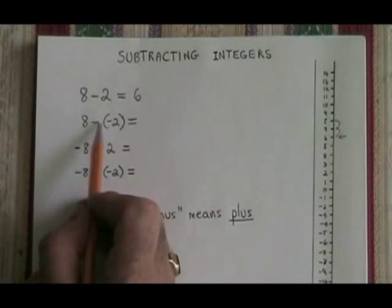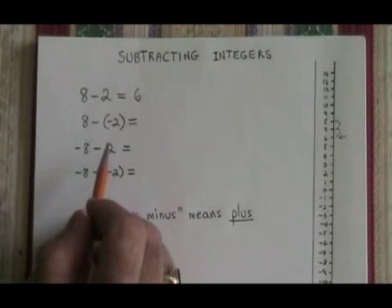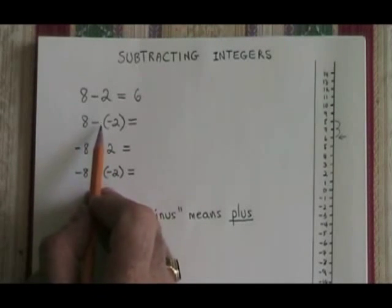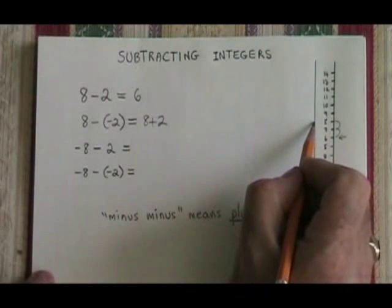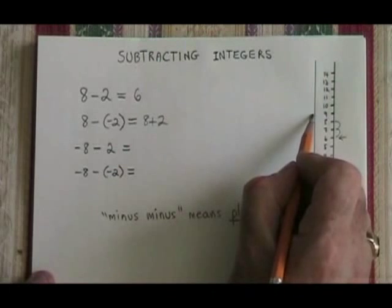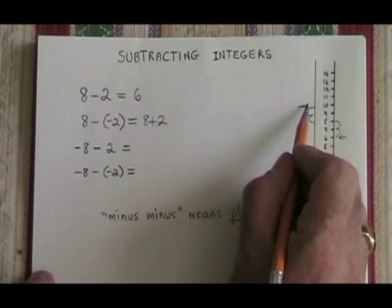Really, the two negative signs cancel into a plus sign. So our starting point is 8, and we are adding 2. On the thermometer, starting point is 8, we add 2, we end up at 10.